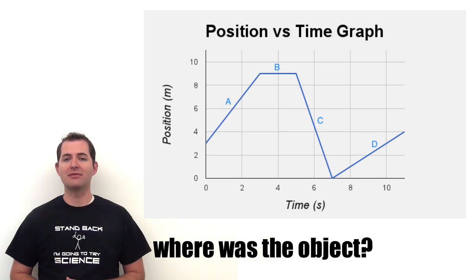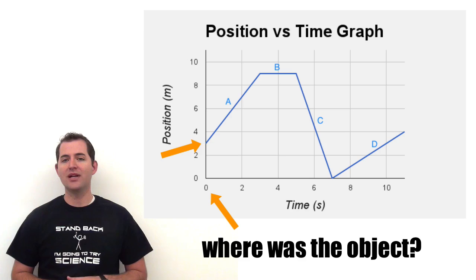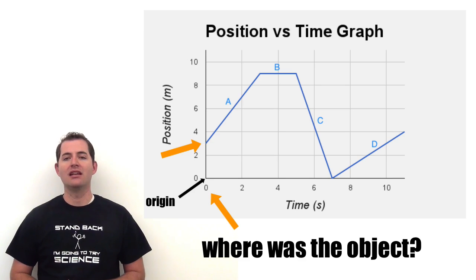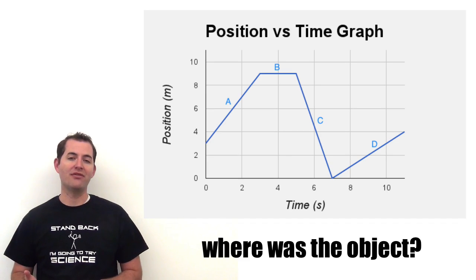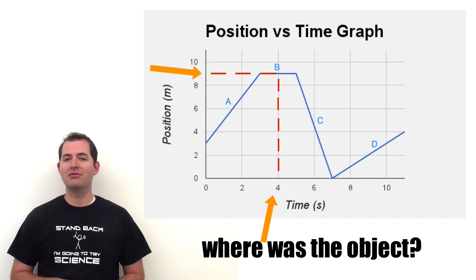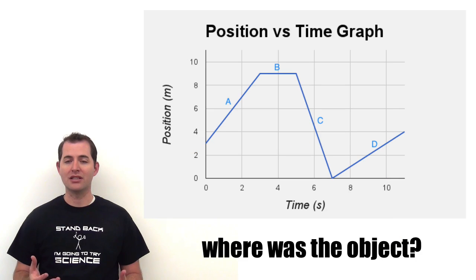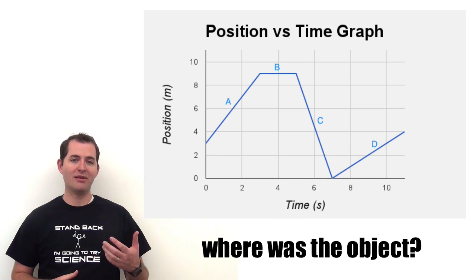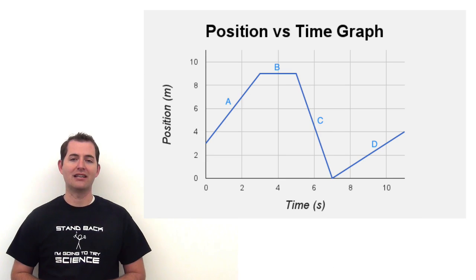We can see from this position versus time graph that the object started three meters away from what we call the origin. We can look at any time on this graph and see where that object was. For example, at four seconds we can see that the object was nine meters away from the origin. Similarly, at ten seconds we can see that the object was three meters away. This is very helpful for identifying where an object was and at what times it was there.